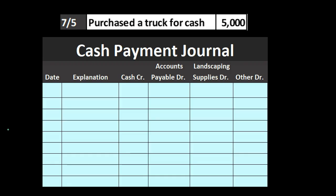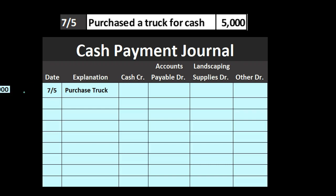Here are our transactions. We'll start with 'purchased a truck for cash of $5,000.' We're going to list the date, add 'purchased truck' as the explanation — if we had a vendor name that would be relevant there. We always have something in the cash column in the cash payment journal because cash is going down, so we label it a credit. Rather than having separate debit and credit columns, we have one line item with the credit.